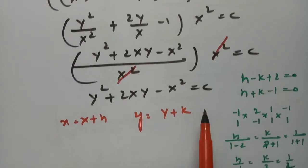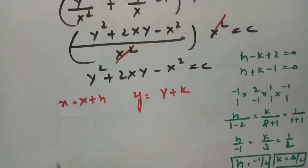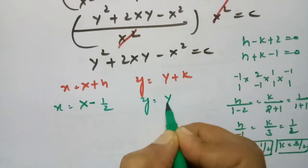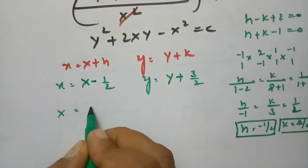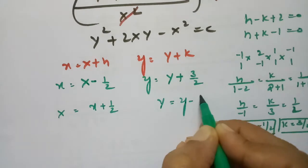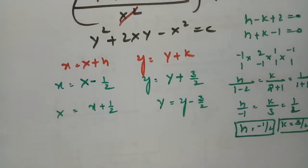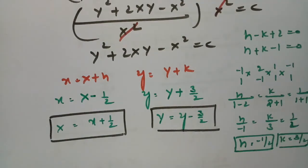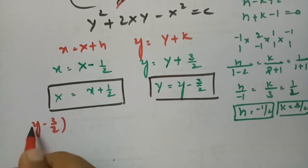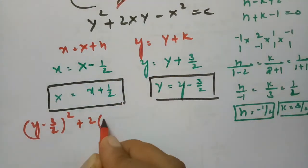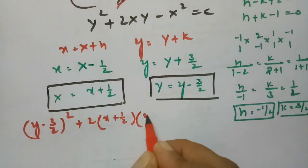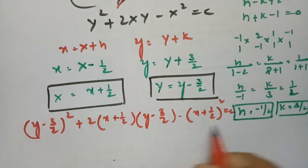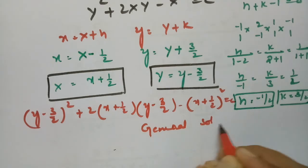The solution is in capital letters and must be transformed to small letters. Replacing capital Y with (y - 3/2) and capital X with (x + 1/2): (y - 3/2)² + 2(x + 1/2)(y - 3/2) - (x + 1/2)² = C. This is the final general solution of the equation.